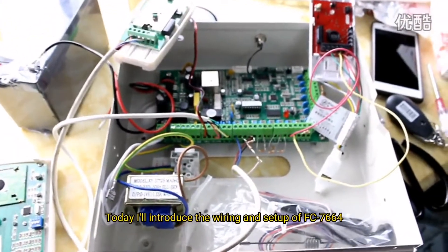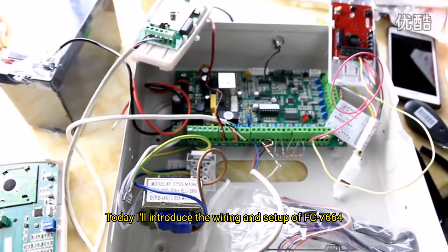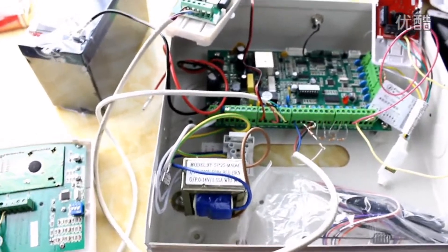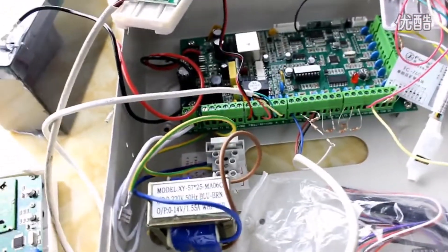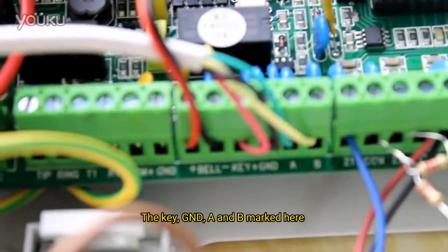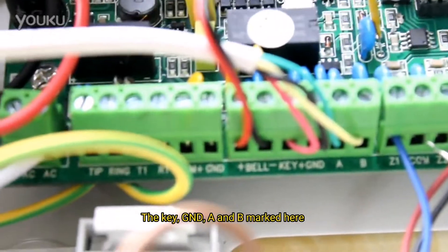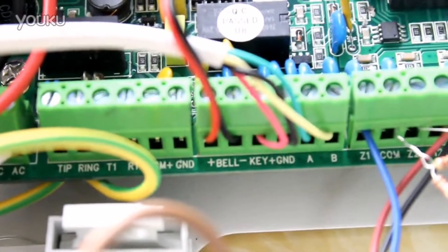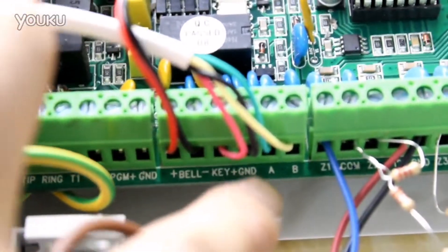Today I'll introduce the wiring and setup of FC7664. The key GND, A and B marked here in FC7664 are connected to the keyboard.